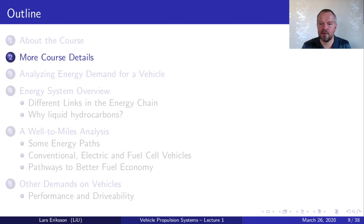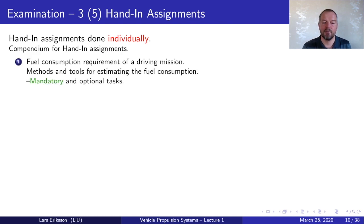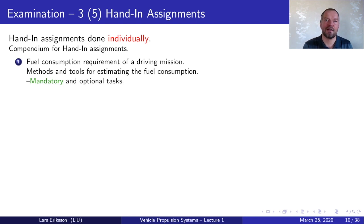Now that you know where the course fits in, we'll go into the course details important for your hand-ins. The hand-in assignments are done individually. Your task is to work with hand-in assignments described in a compendium. There is a sequence of five hand-in assignments, each with a set of mandatory tasks and a set of optional tasks. The first hand-in assignment is about fuel consumption requirements of a driving mission, where you work with methods and tools for analyzing energy consumption of vehicles.